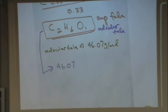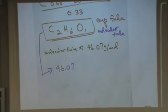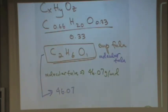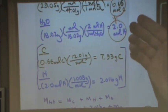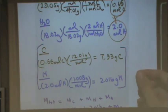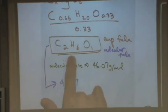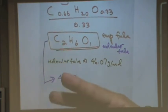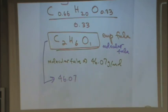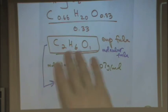A student asked about sig figs during the combustion analysis calculation. The answer: not really critical during intermediate steps — keep a few digits. The reason is that you're ultimately ending up with whole numbers due to the law of multiple proportions, which are exact numbers. So sig figs don't matter for the final subscripts. But keep at least two to three digits in intermediate steps so you don't round badly and get the wrong whole number.